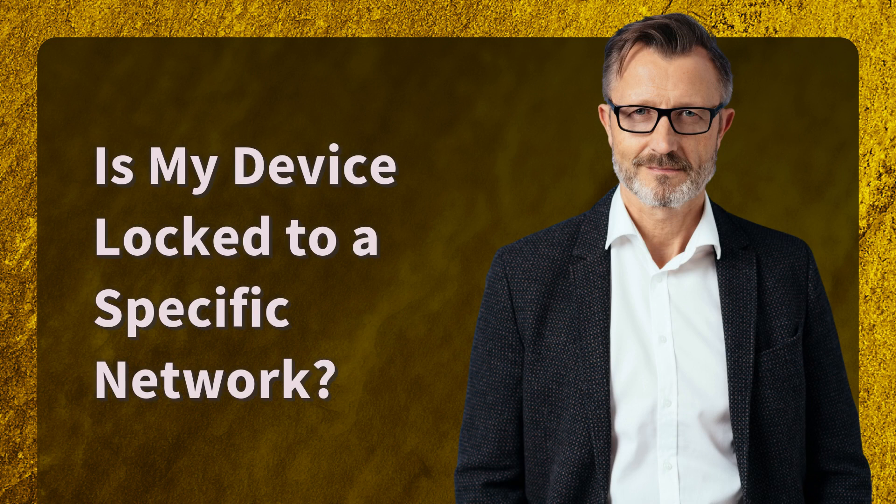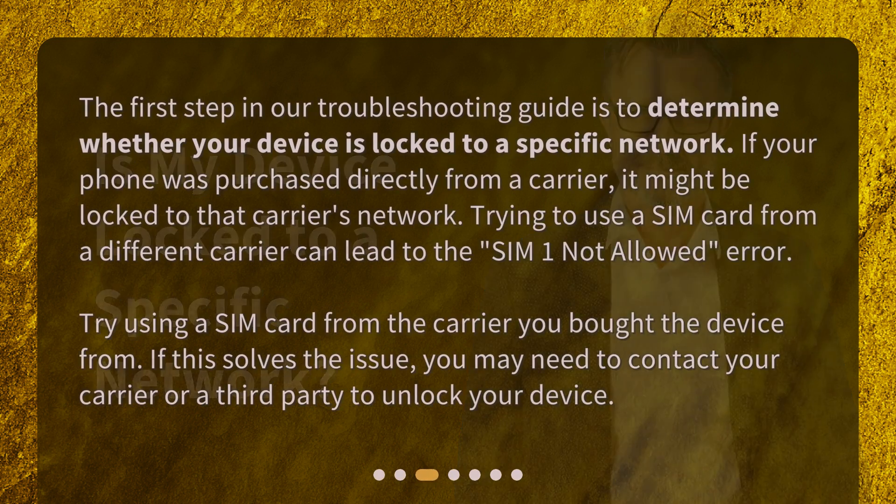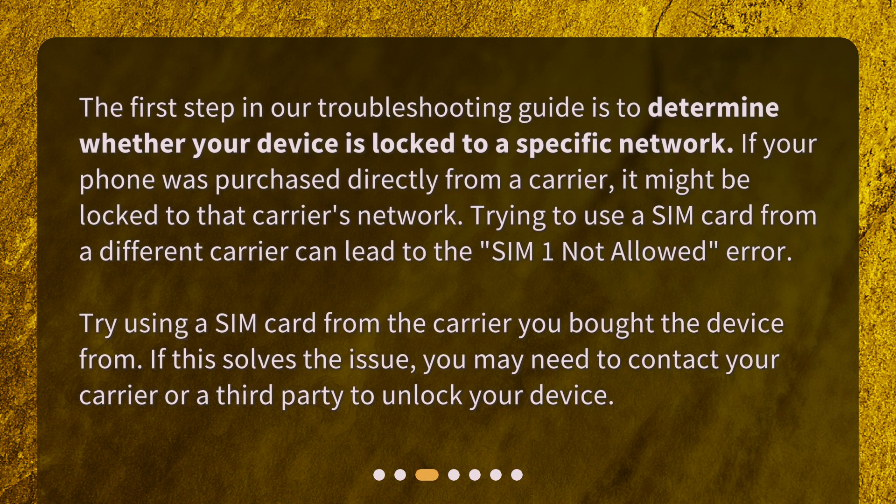Is my device locked to a specific network? The first step in our troubleshooting guide is to determine whether your device is locked to a specific network. If your phone was purchased directly from a carrier, it might be locked to that carrier's network. Trying to use a SIM card from a different carrier can lead to the SIM1 Not Allowed error. Try using a SIM card from the carrier you bought the device from. If this solves the issue, you may need to contact your carrier or a third party to unlock your device.